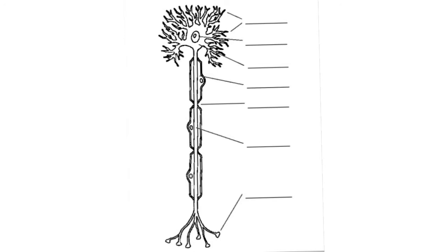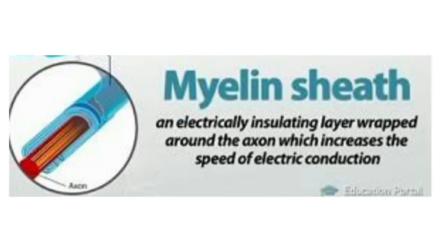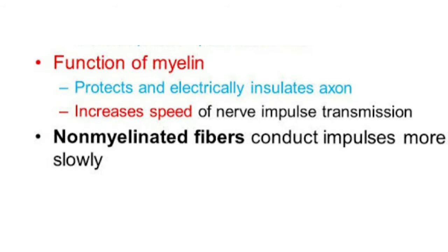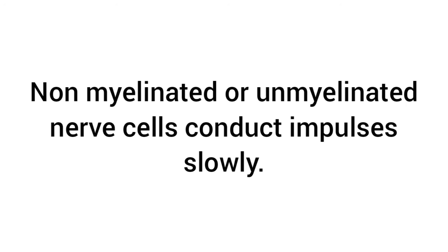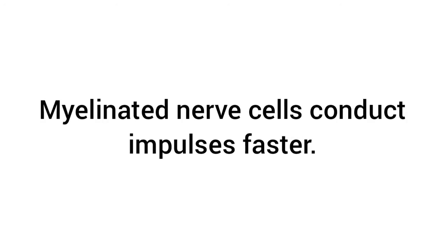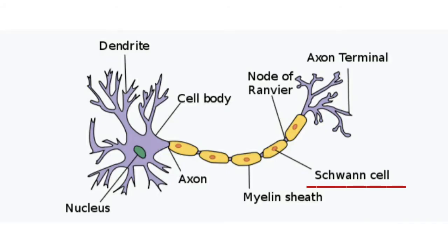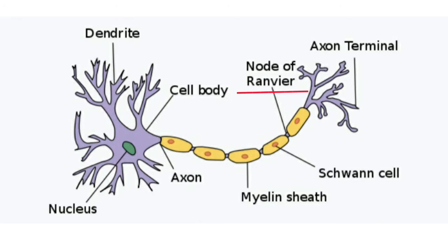The myelin sheath allows electrical impulses to be transmitted quickly and efficiently along the nerve cells. Some nerve cells do not have a myelin sheath — they are called unmyelinated nerve cells. Unmyelinated nerve fibers conduct impulses at lower speed, while myelinated nerve cells conduct impulses at a faster rate. The myelin sheath is made up of cells called Schwann cells. The myelin sheath is not a continuous layer; it is interrupted at regular intervals, and those interruptions are called nodes of Ranvier.